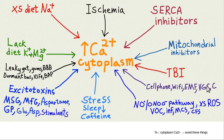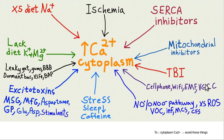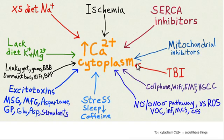This video is called 'Do All Roads Lead to Roam and to Calcium?' I've been studying a lot about calcium signaling in brain cells and neurons, and the key point of this whole talk is that almost all the bad things happening to brain cells lead to increased calcium in the cytoplasm of the neuron.